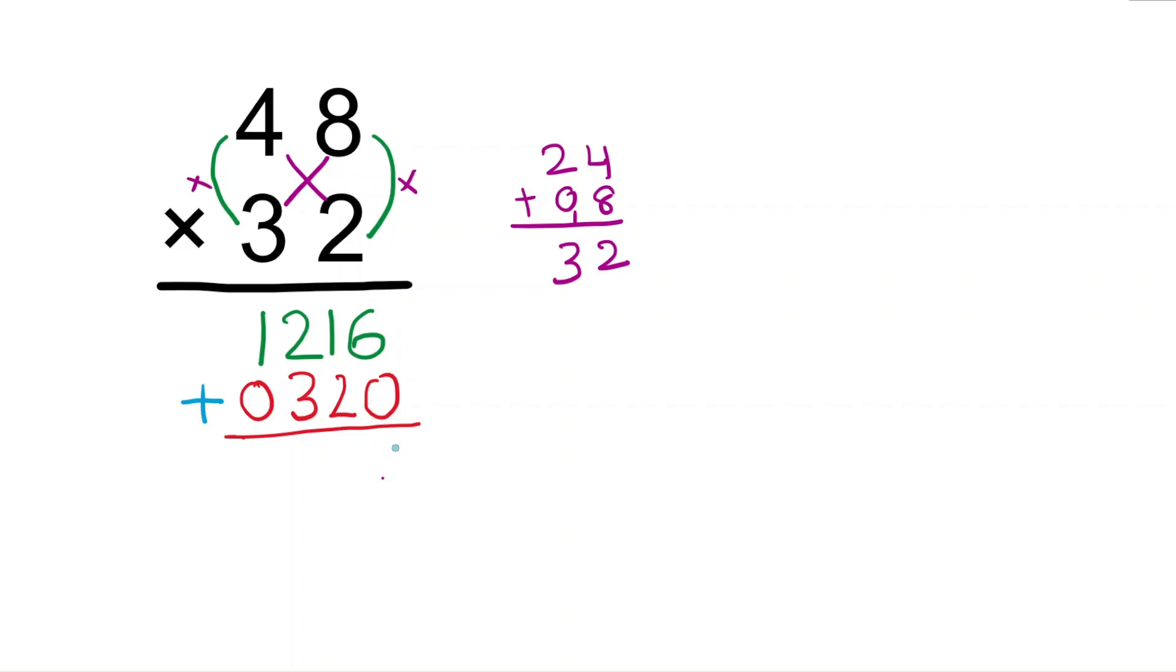In the ones place, six plus zero is six. Tens place, one plus two is three. Two plus three is five, and one plus zero is one. One thousand five hundred thirty-six is the answer.